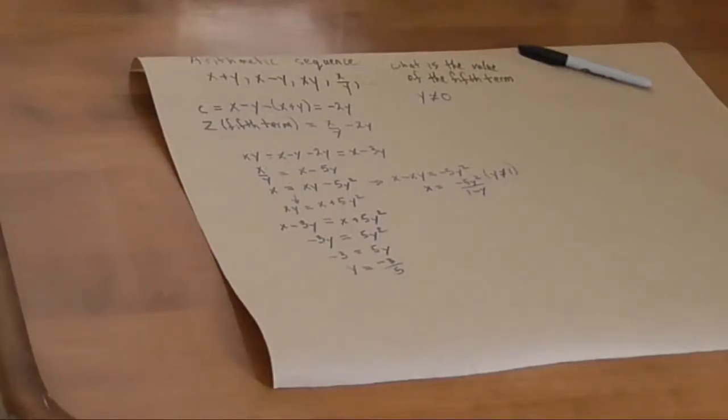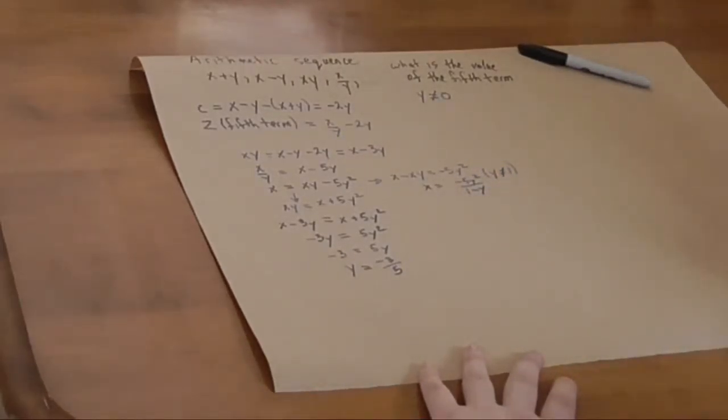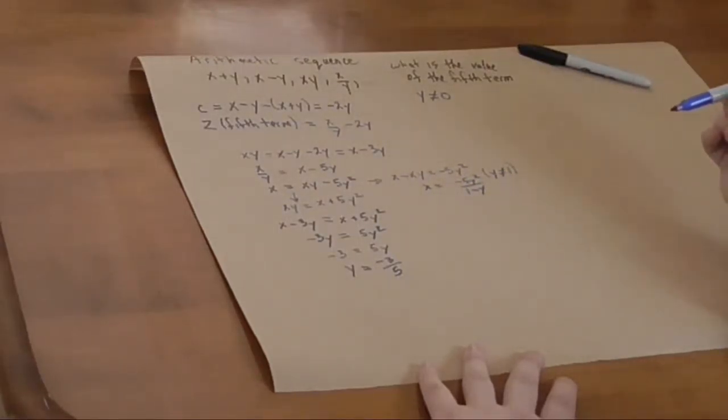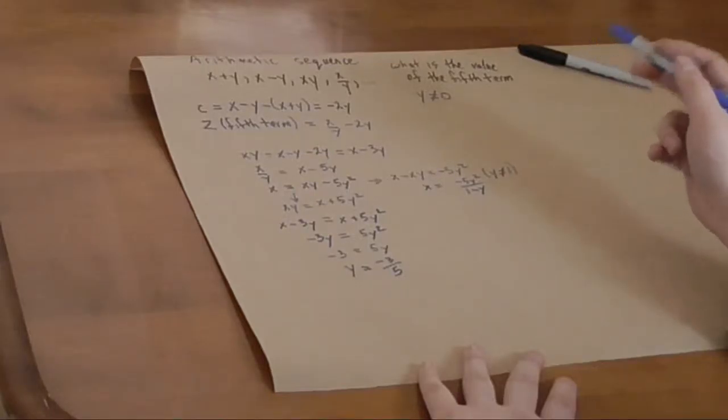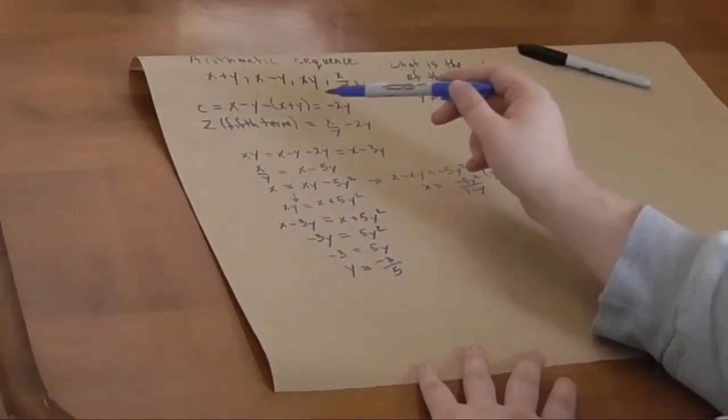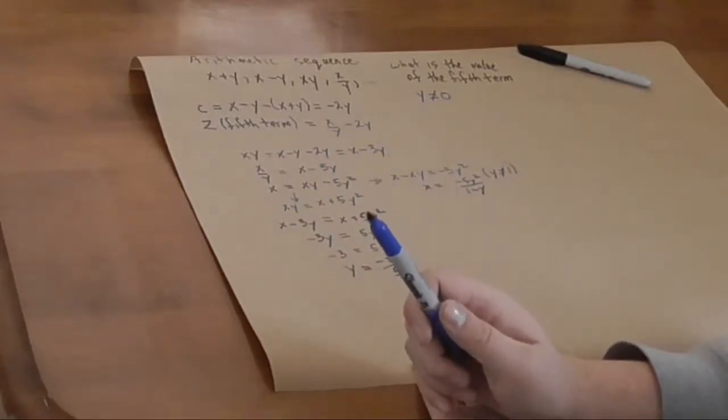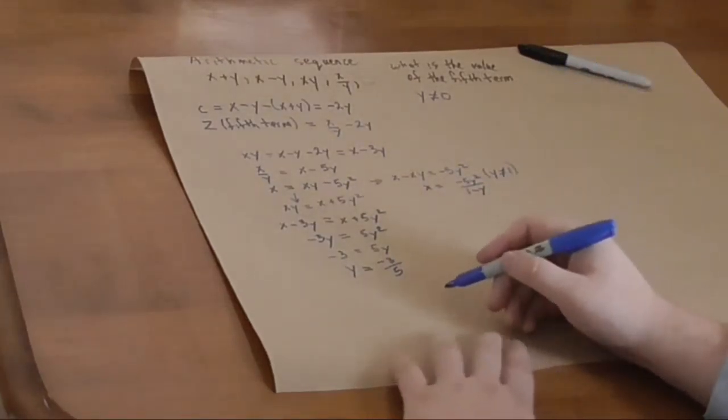Now, we can solve for x. Oh, we could try just stuffing it into this equation. That doesn't look very friendly. Because then we have to square minus 3 fifths, and we have to subtract minus 3 fifths from 1. But is that any better or worse than, say, substituting it into xy equals x minus 3y? Well, I don't know that it is. So, now that I've calculated that, I might as well use it.